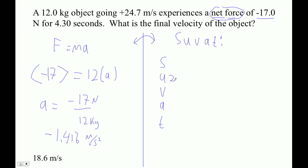Our initial velocity is 24.7, that's positive. Our final is what we want to find, our acceleration we get from this side, negative 1.416. And then our time is 4.3 seconds.